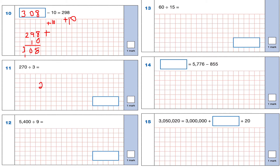Question 11: 270 divided by 3. Using the bus stop method: how many 3s go into 2 — that's 0; how many 3s go into 27 — that's 9, remainder 0; 3s into 0 is 0. The answer is 90.